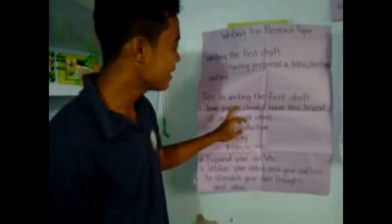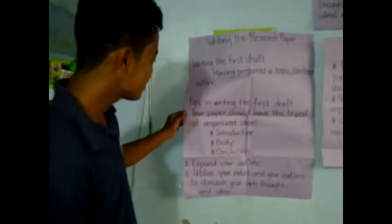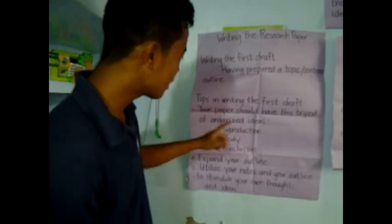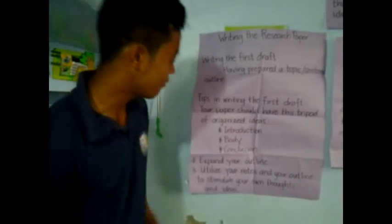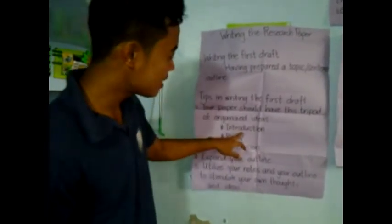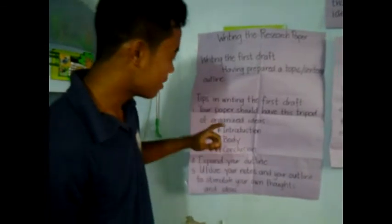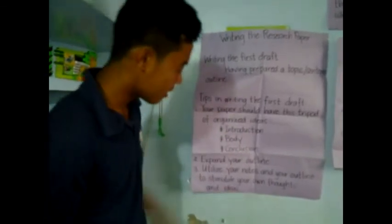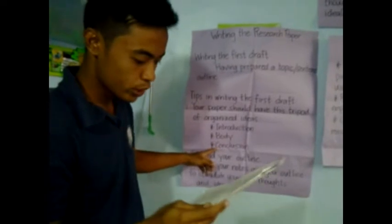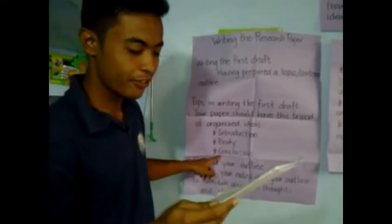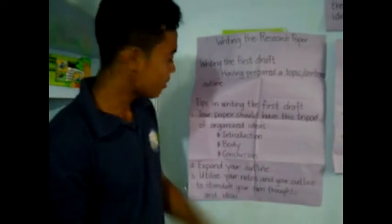Next are tips in writing the first draft. First, your paper should have this tripod of organized ideas: introduction, which contains your thesis statement, the body, which consists of paragraphs, and conclusions. The conclusion is a generalized statement right after a very short summary of your main points.